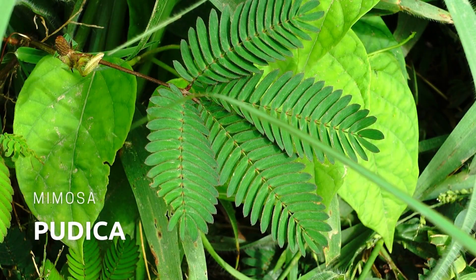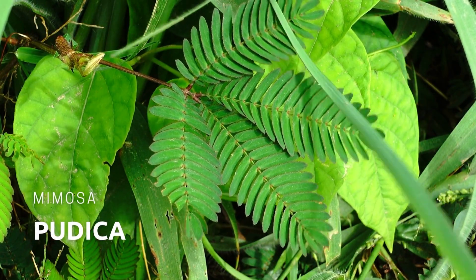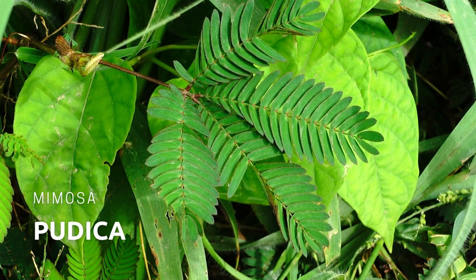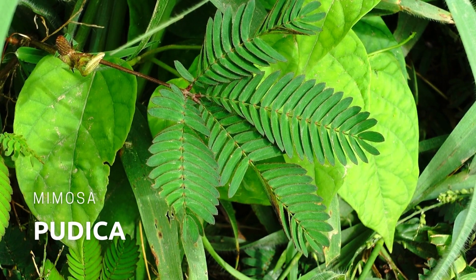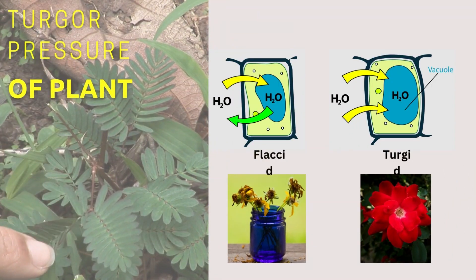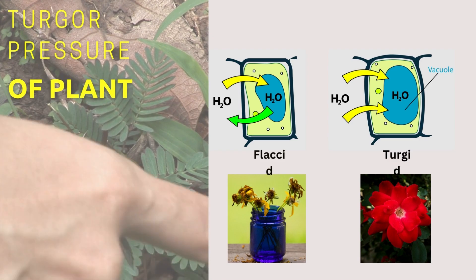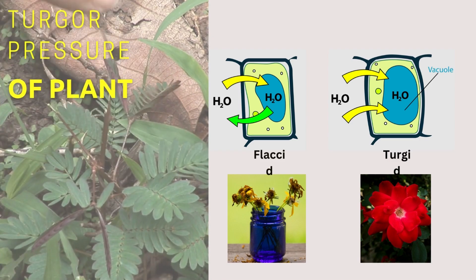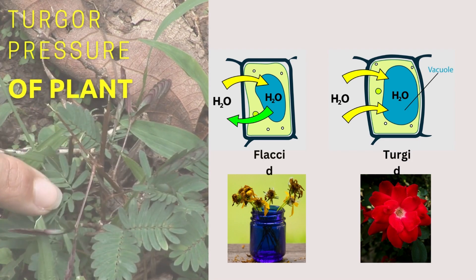The sensitive plant also undergoes a remarkable change in leaf shape triggered by mechanical touch. A light touch or vibration produces a sudden drooping of the leaves, the result of a dramatic reduction in turgor pressure in cells at the base of each leaflet and leaf.